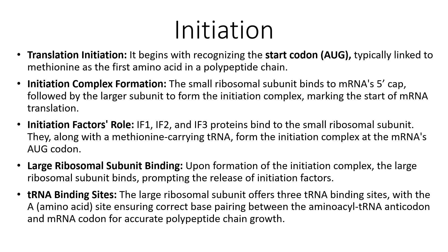The three processes of translation — initiation, elongation, and termination — are also similar in name to DNA transcription, though with different steps. During translation initiation, the process begins with recognition of the start codon AUG, with methionine as the first amino acid in the polypeptide chain. The initiation complex is formed when the small ribosomal subunit binds to the mRNA 5' cap, which is produced after pre-mRNA processing to produce mature mRNA, followed by the larger 28S subunit to form the initiation complex marking the start of mRNA translation.